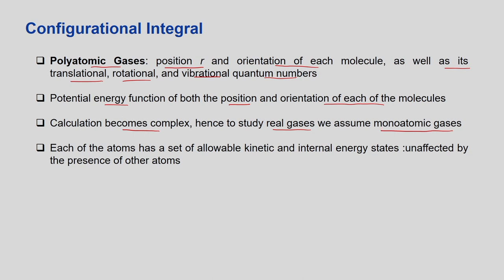Assuming monoatomic gases, we take N such atoms where each atom has a set of allowable kinetic and internal energy states unaffected by the presence of other atoms. The total energy of macroscopic state i can be written as E_i equal to summation over j from 1 to N of the internal energy E_j — where the internal energy is primarily the electronic energy — plus all the cross terms.